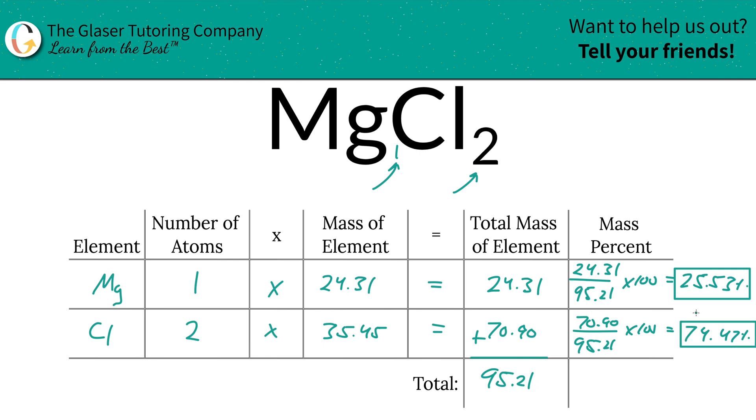The way the numbers kind of worked out there - 74.47 and 25.53 - when you add up those percentages, it should equal 100.